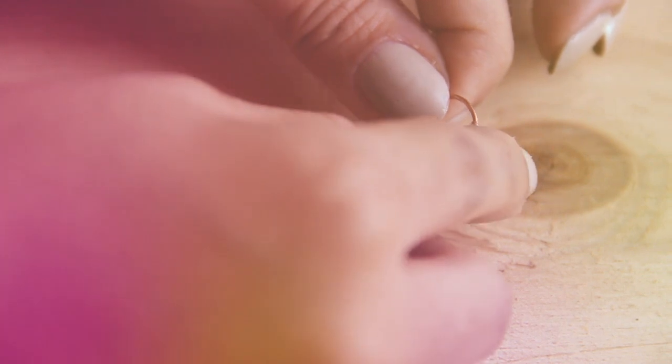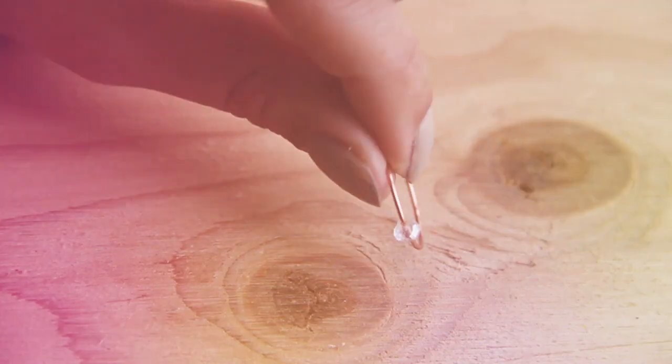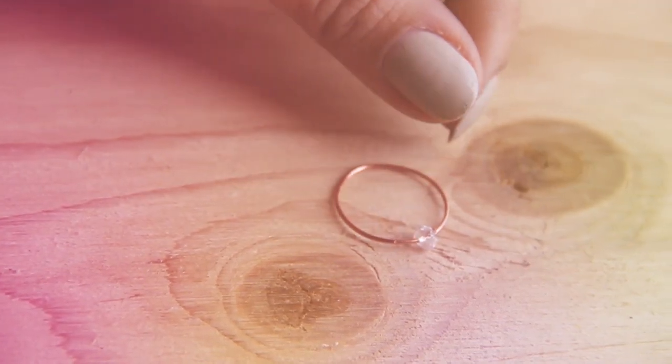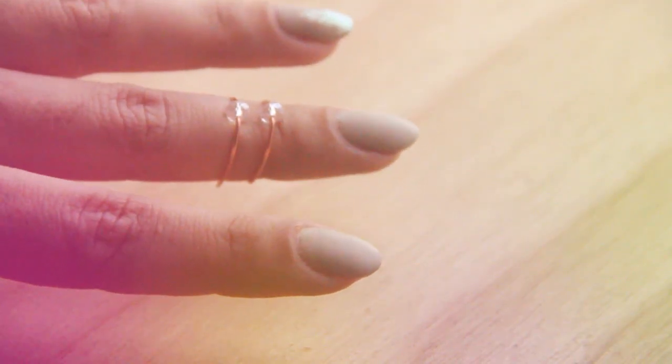Once you're done with that, you're going to take a crystal or bead and place it on the ring where the two stems meet. And that's how simple it is to make. And if you want, you can make multiple ones, stack them on top of each other, or mix and match them.